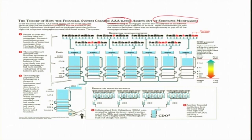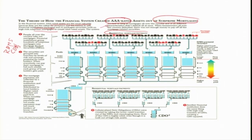Financial institutions packaged and repackaged these assets — first packaging them into residential mortgage-backed securities, then further repackaging them into CDOs. They repackaged securities built on high-risk subprime mortgages to create triple-A rated assets. The system worked as long as the mortgages all over the country with all different characteristics did not default all at once.